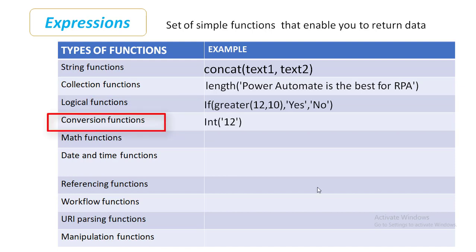Now we'll talk about conversion functions. Conversion functions are used to convert data from one data type to another. For instance, suppose I'm having the value 12 but it is in double quotes — meaning it is a string data type — and I want to convert it to an integer. Then I'm going to use int() on the string value. This can be simple things like converting a text number into an integer, or more complex functions like changing the encoding of a file from Base64 to binary.